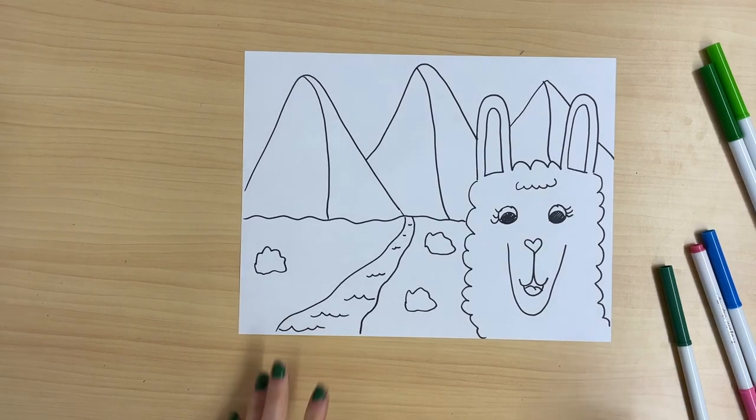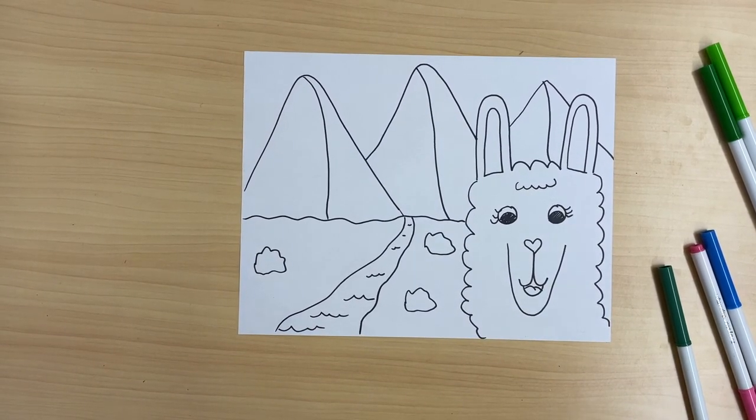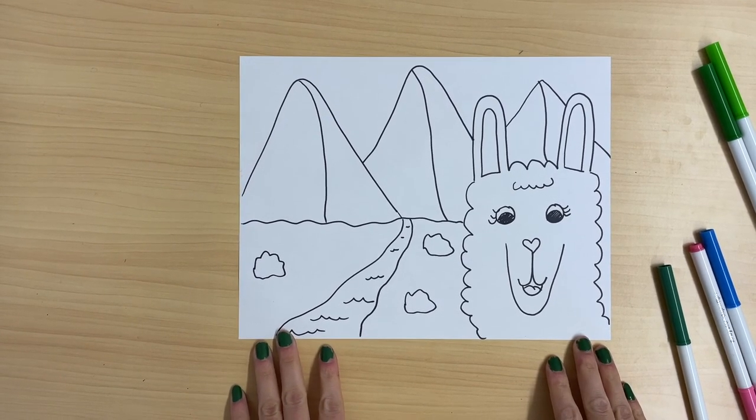When you're done drawing, it's time to color. You can use whatever materials you have at home. You can even use paint if you have paint. You can use glitter, whatever you want to use to add color.